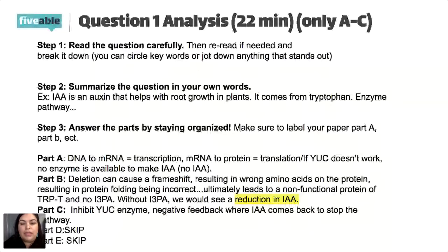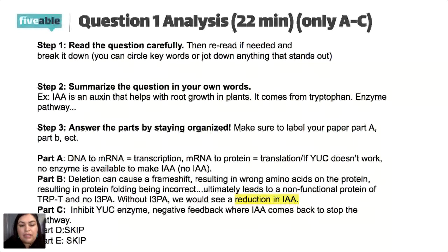Now we identify the molecule that would be absent if enzyme YUC is non-functional. Looking at the figure, YUC is the enzyme on the bottom right. If this enzyme is not working, we wouldn't see I3PA converted to IAA. So the molecule that would be absent is IAA.